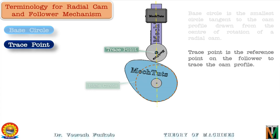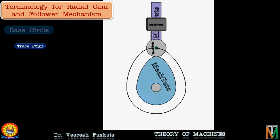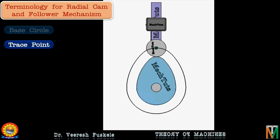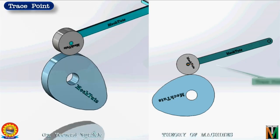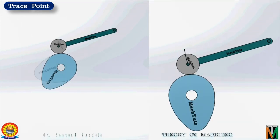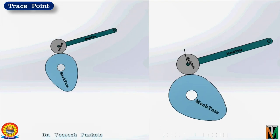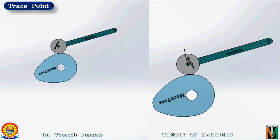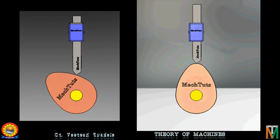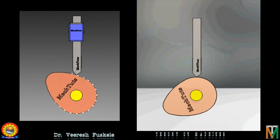In the roller follower the trace point is the center of the roller — the movement of the follower is described in terms of this roller center. For the roller follower the trace point is the same for all positions since the motion is translational. For an oscillating follower it is also the center of the roller, but we concentrate on the circular arc along which the roller center moves. In the case of a knife edge follower it is the point of contact of the cam and the follower tip.